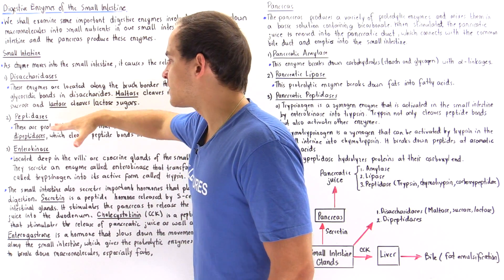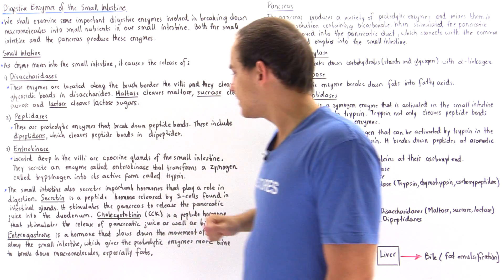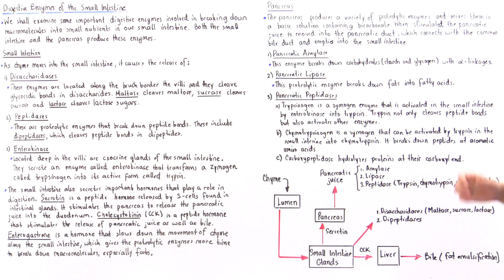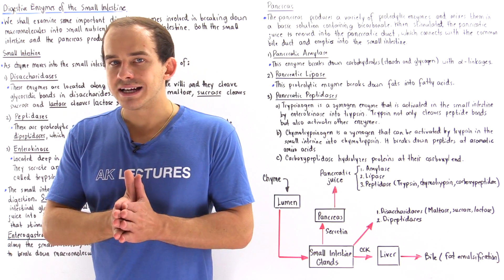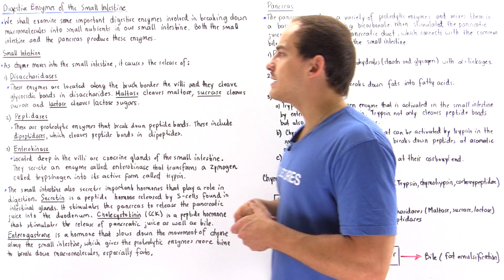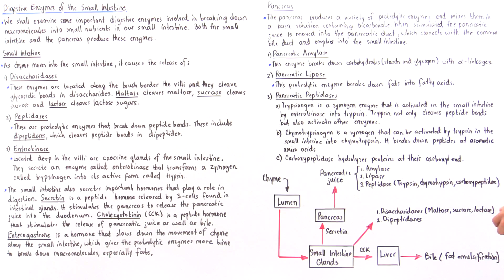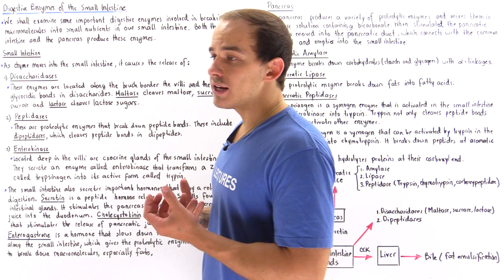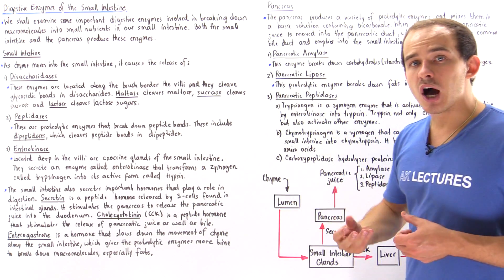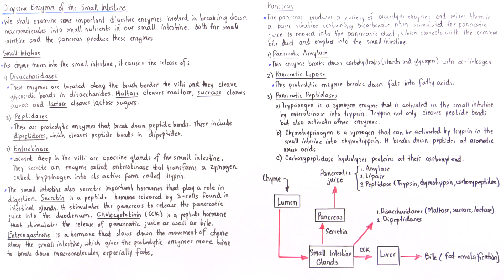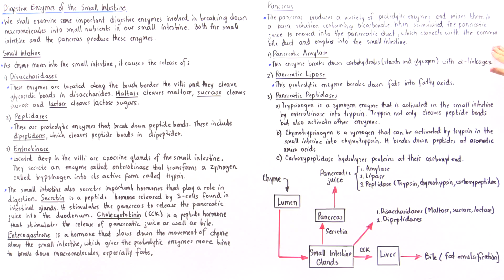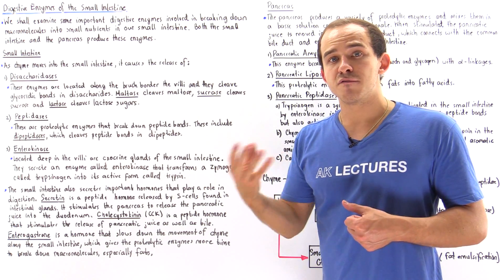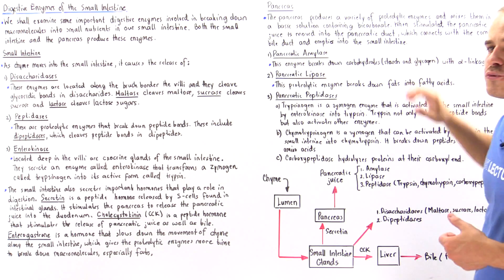So those are the proteolytic enzymes and hormones produced by the small intestine. Now let's move on to the pancreas. The pancreas is an accessory gland that produces specialized proteolytic enzymes needed in digestion. We have a combination of proteolytic enzymes as well as a solution of bicarbonate that forms the pancreatic juice. When stimulated, the pancreas releases the pancreatic juice into the pancreatic duct, which connects with the common bile duct, and this combination of bile and pancreatic juice empties into the small intestine.